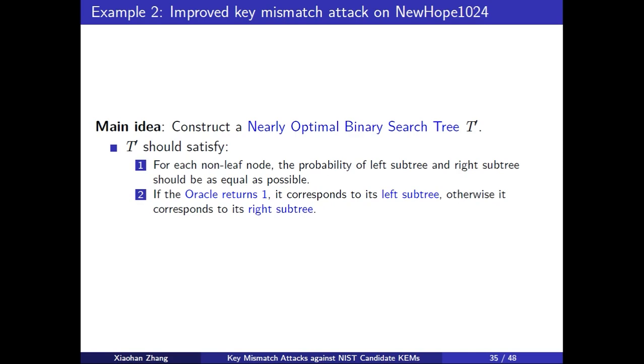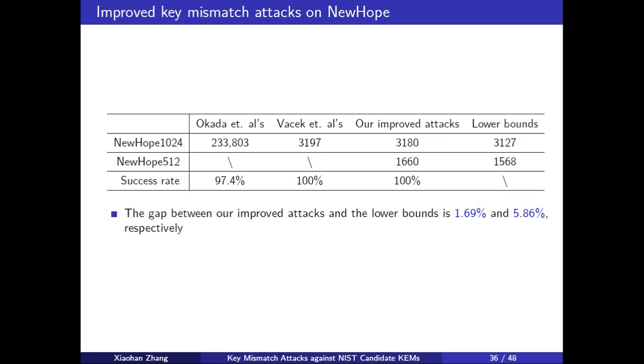Next, we give an example on NewHope1024. Our main idea is constructing a nearly optimal binary search tree which need to satisfy the property. For each non-leaf node, the probability of left subtree and right subtree should be as equal as possible. The relationship between Oracle returns value and the left tree or right subtree is same as Huffman tree. Our attacking on the local schemes. We can see the results in the table. The gap between our improved attacks and the lower bounds is 1.69% and 5.86% respectively.